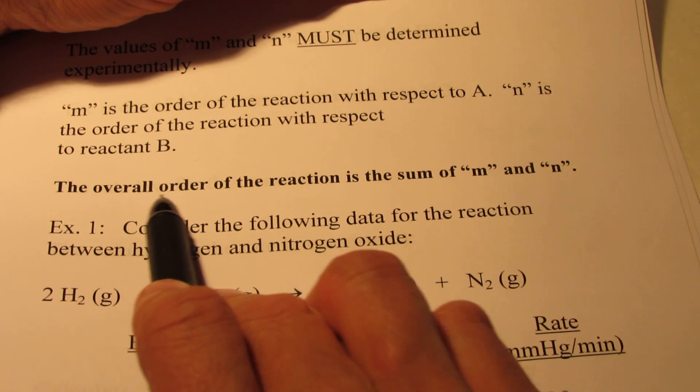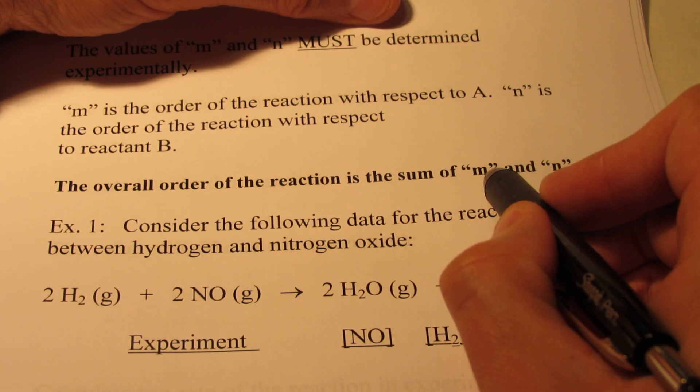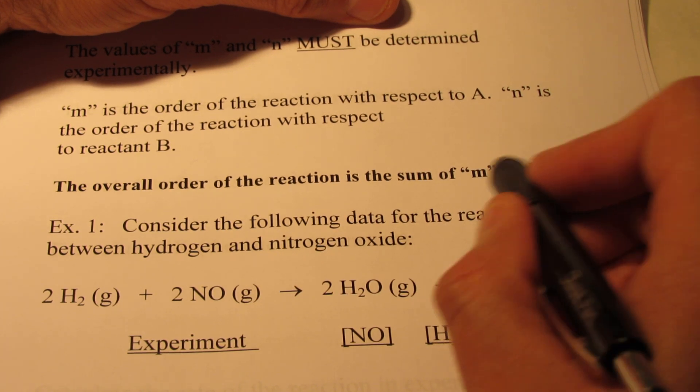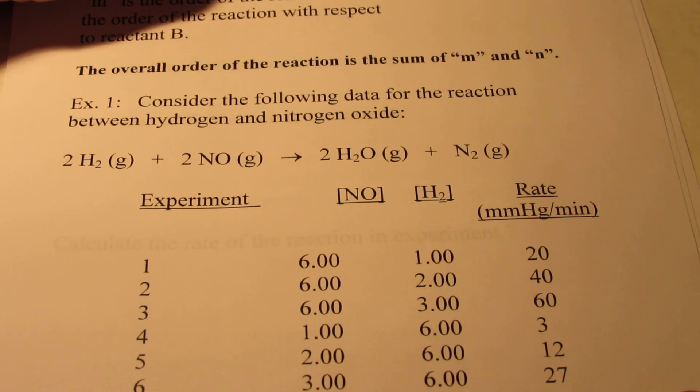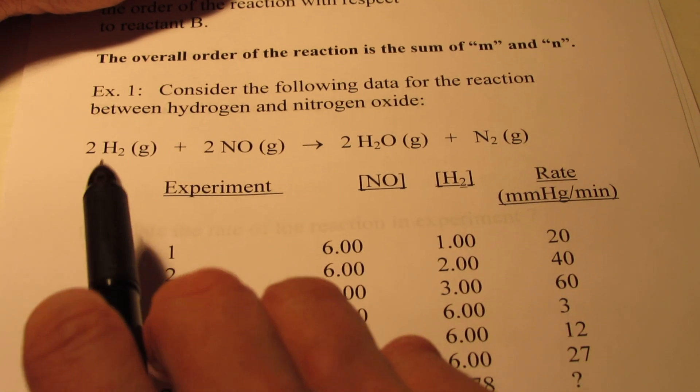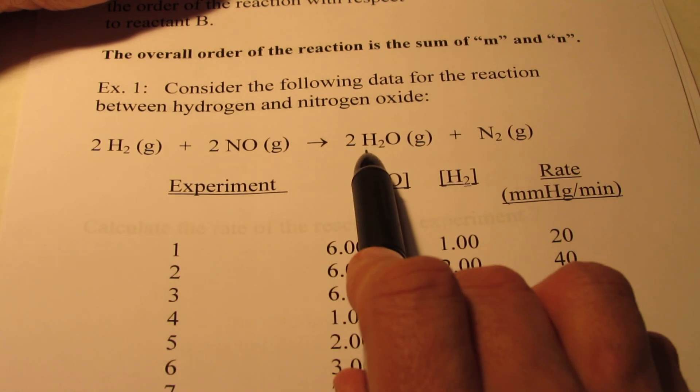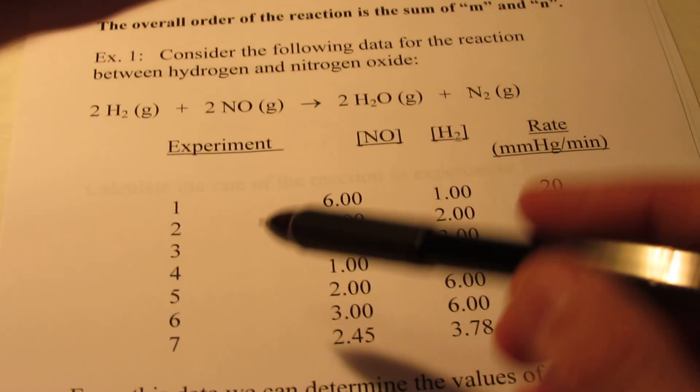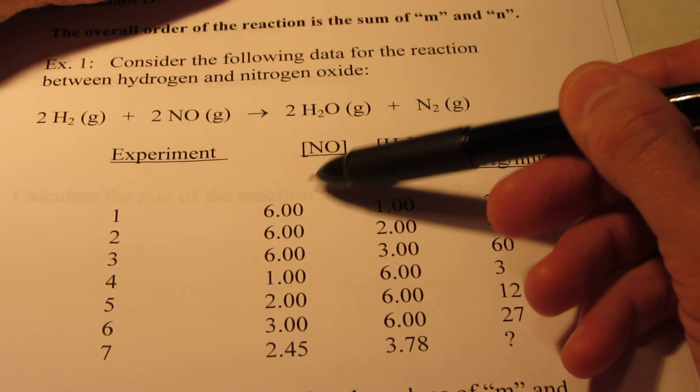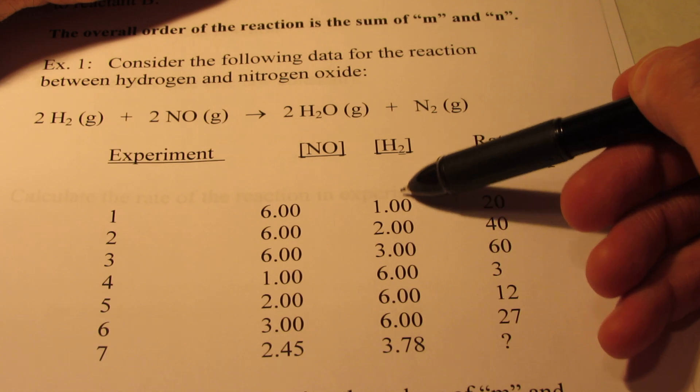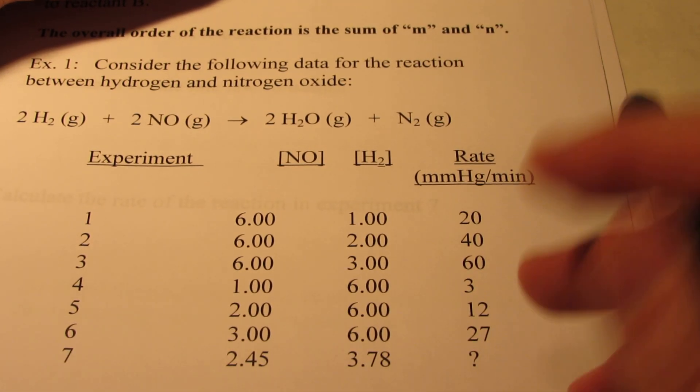Sometimes you'll be asked to find the overall order of the reaction, and that's simply the sum of the two exponents, M and N. Now, the best way to explain this is simply by giving an example. We have hydrogen and nitrogen oxide producing water vapor and nitrogen gas. And I conduct seven experiments. In those experiments, you can see I'm changing the concentration of NO, and I'm changing the concentration of H2. And as you would expect, the rate changes.